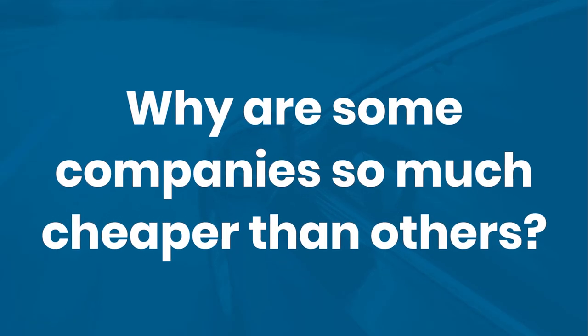Why are some companies so much cheaper than others? That's a very loaded question with several answers. The first is that not all insurance policies are created equal. Insurance policies are contracts, and that means the legal department at each insurance company either took a template or wrote their own contract and they've got differences. Different things are covered, different things are excluded, and most importantly, very small differences in contract language can have very large implications in a claim payout or in a lawsuit.